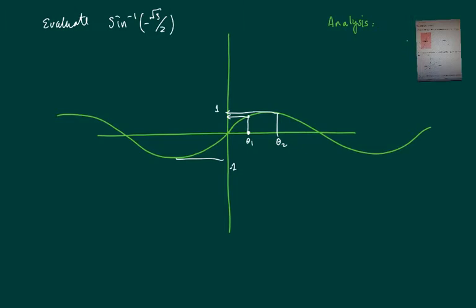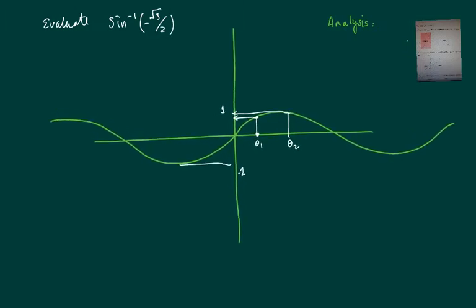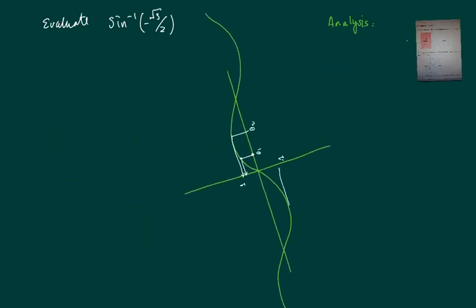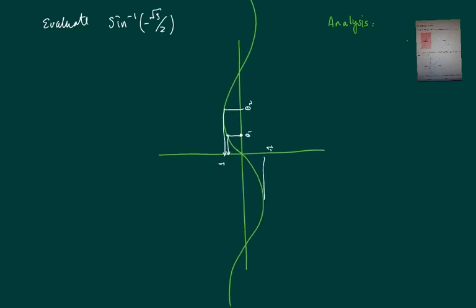However, here's the problem. Once we rotate the sine curve 90 degrees, this curve becomes our arc sine, so the inverse sine.